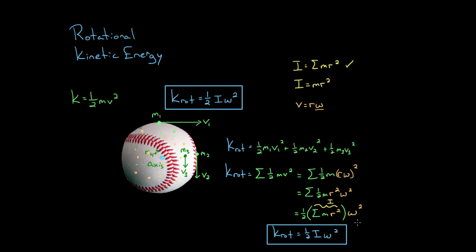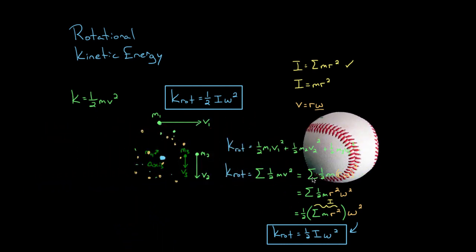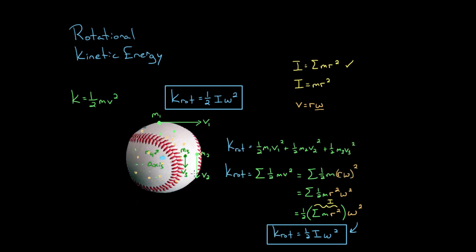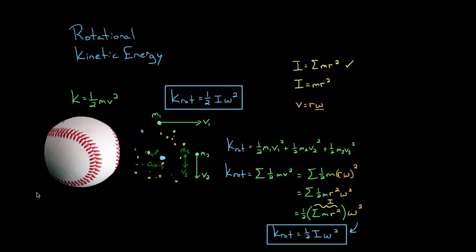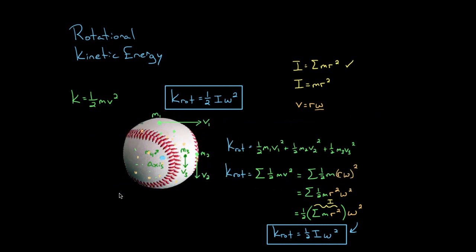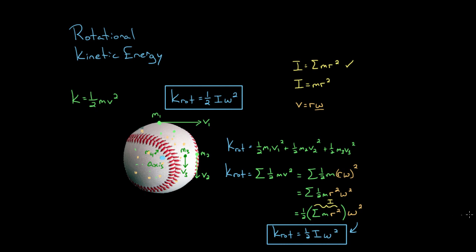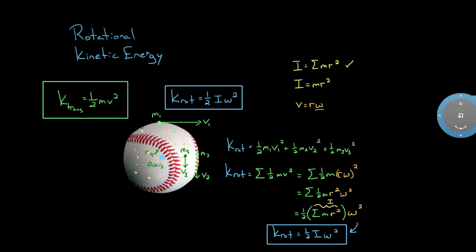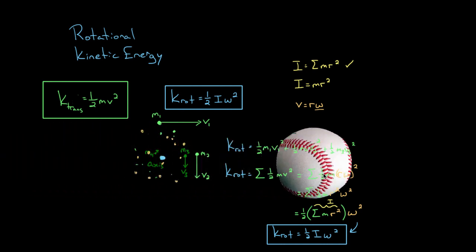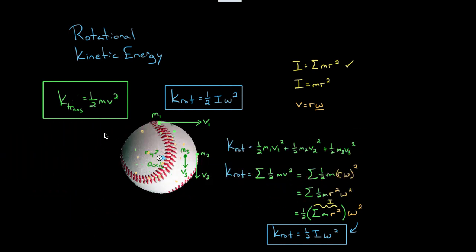What this quantity gives us is the total rotational kinetic energy of all the points on that object about the center of mass. But here's what it doesn't give you: this term does not include the translational kinetic energy. The fact that this baseball is flying through the air - that the center of mass is translating - is not incorporated by this formula. We can handle that separately with one-half mv squared, which is the translational kinetic energy.